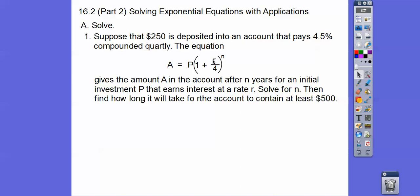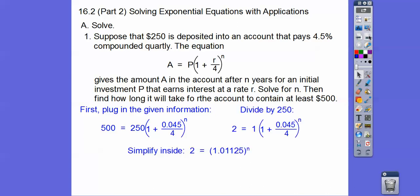That's our rate. So solve for N, then find how long it'll take. N is in an exponent, so we're going to do some logarithm stuff. Let's plug the numbers in. To double the account, we want to go to $500. I'm going to divide both sides by 250 and clean that up.